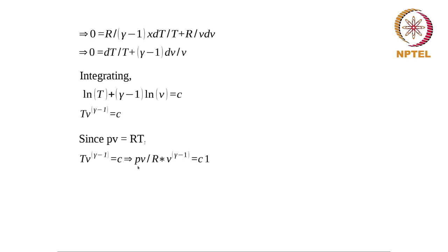Since PV = RT, we have T = PV/R. Substituting into T·V^(γ-1) = constant, we get (PV/R)·V^(γ-1) = constant. Combining the V terms gives V^1 · V^(γ-1) = V^γ, and dividing R to the other side gives us PV^γ = constant, which is the relation between pressure and volume for an ideal gas undergoing a reversible adiabatic — essentially an isentropic — process.